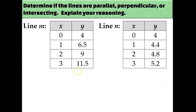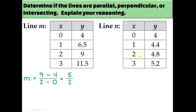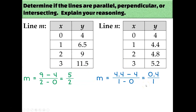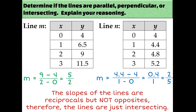Let's try that again. I see some ugly points, so I'll pick (2, 9) and (0, 4) to calculate my slope. Using slope formula I get 5 halves for line m. For line n, I'll have to use one of the decimal values. That gives me 0.4 over 1, which equals 2 fifths. The slopes are 5 halves and 2 fifths — they are reciprocals, but they're not opposites because they're both positive. So these two lines are just intersecting, which means neither a translation nor a rotation of 90 degrees would map one onto the other.